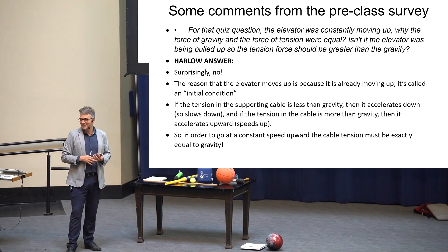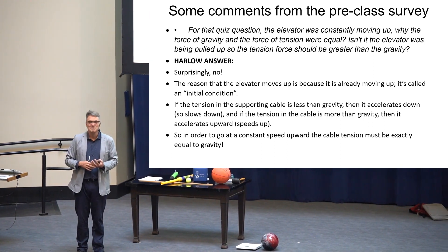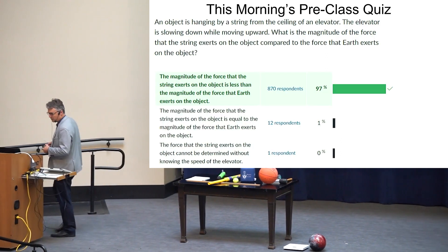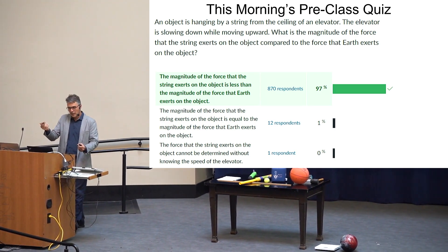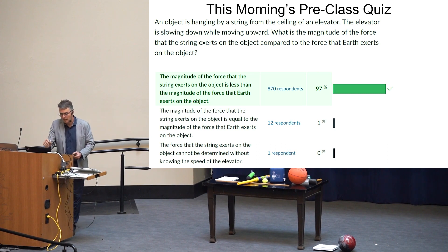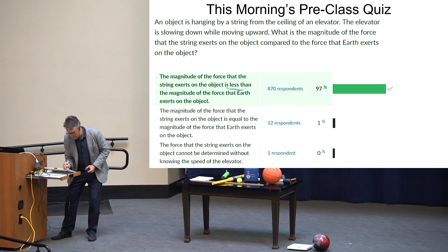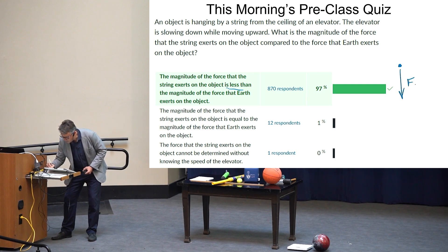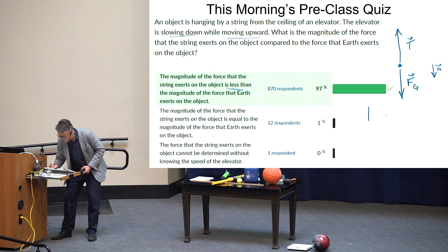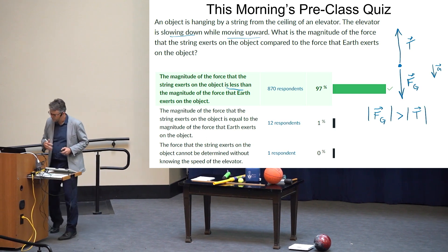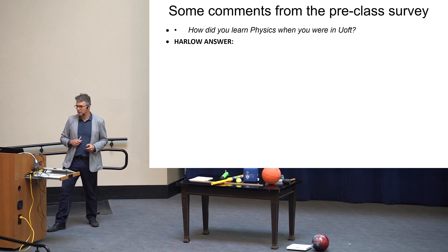A student actually asked, if there's a force of the cable supporting the elevator and it's going up, why would it go up unless the force on the cable was greater than the force of gravity? Good question. Surprisingly, no. The reason that the elevator moves up is because it already was moving up. It's what we call an initial condition in physics. The initial conditions are the position and the velocity.